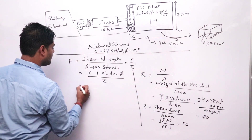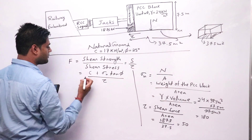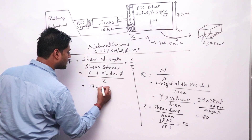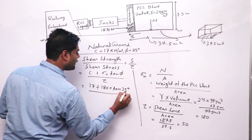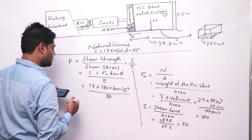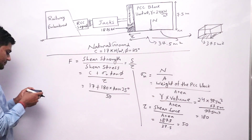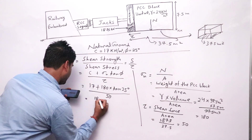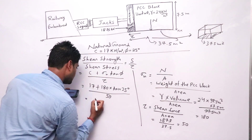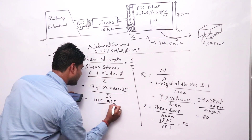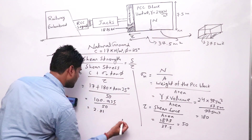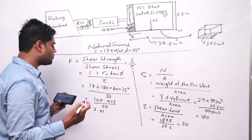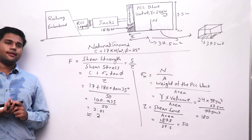Now we can put the values to find the factor of safety. Cohesion c is 17, sigma_n is 180, multiplied by tan(phi). The whole shear strength value comes to 100.935, divided by tau which is 50. The factor of safety is 2, which matches the answer given by IIT in GATE 2019.